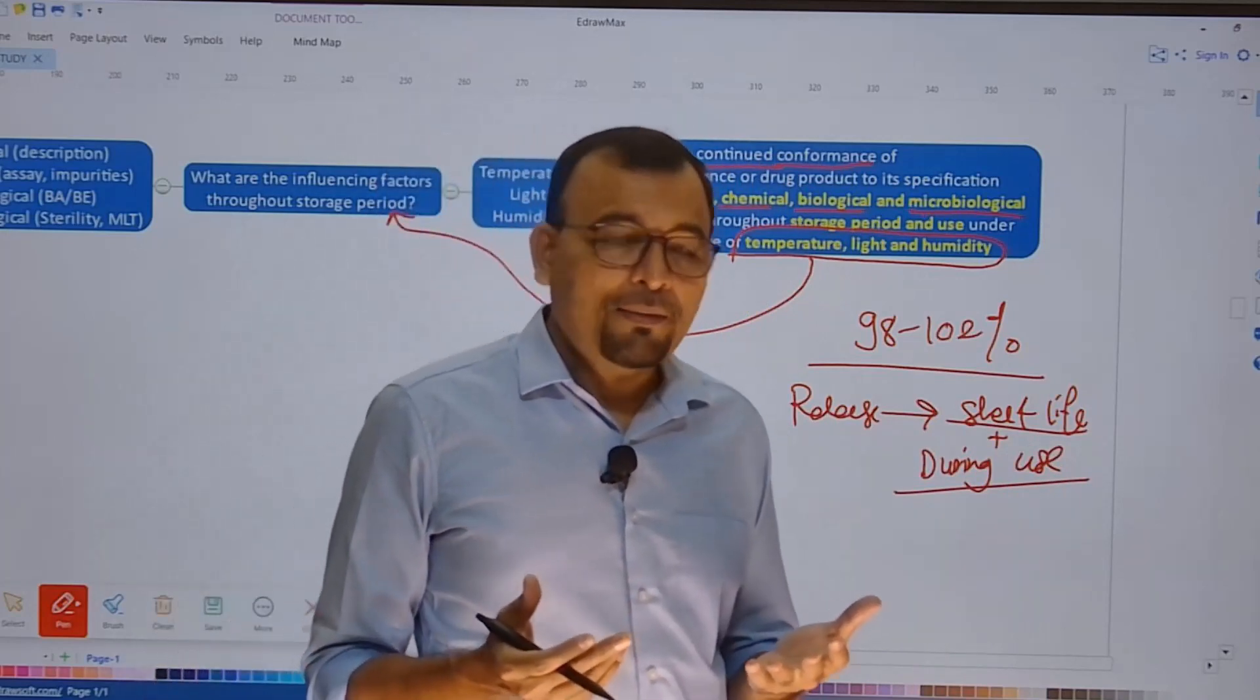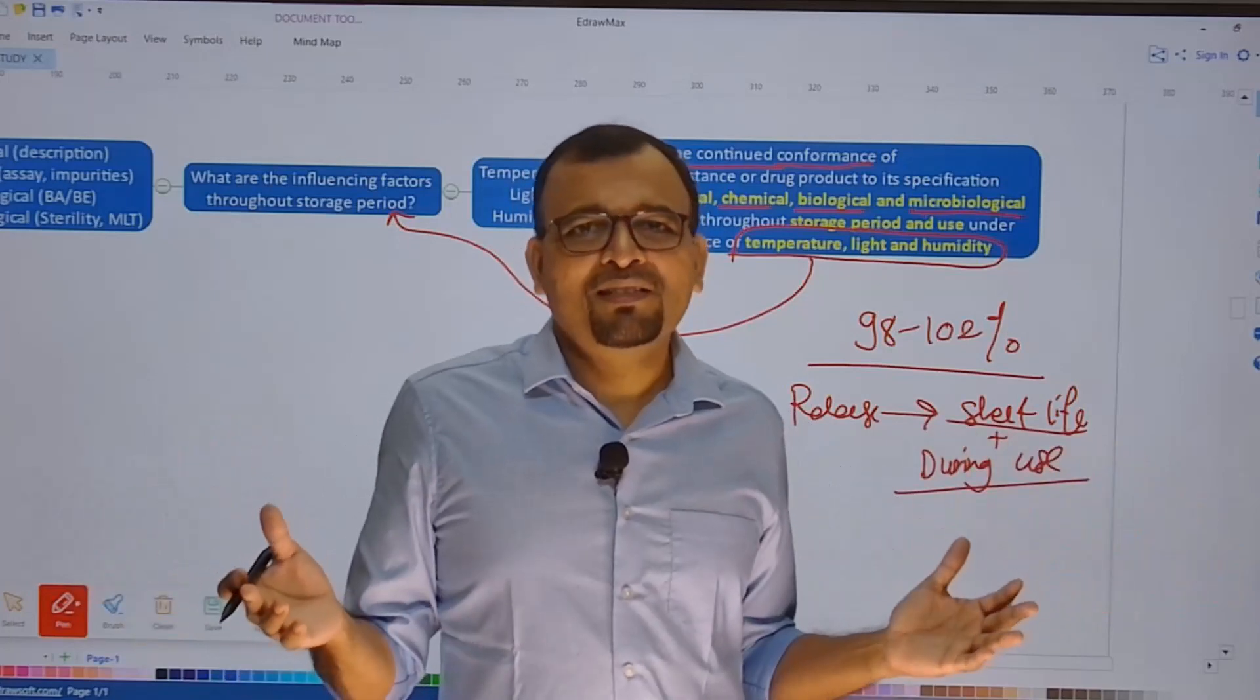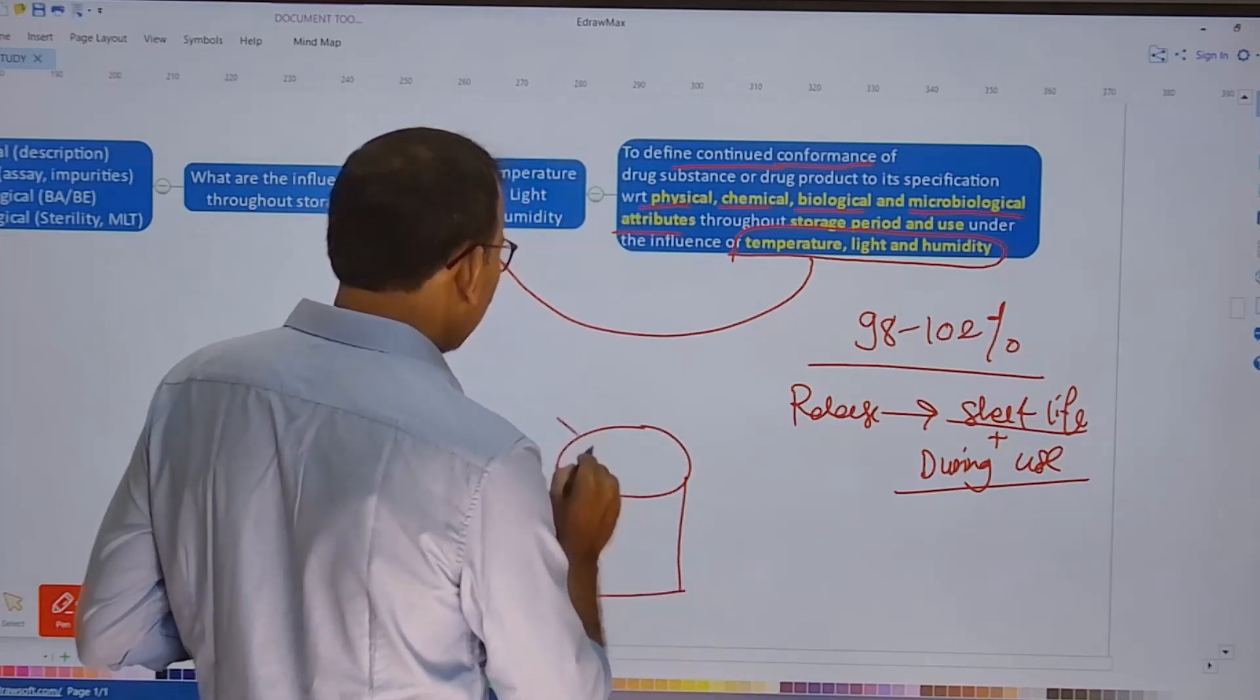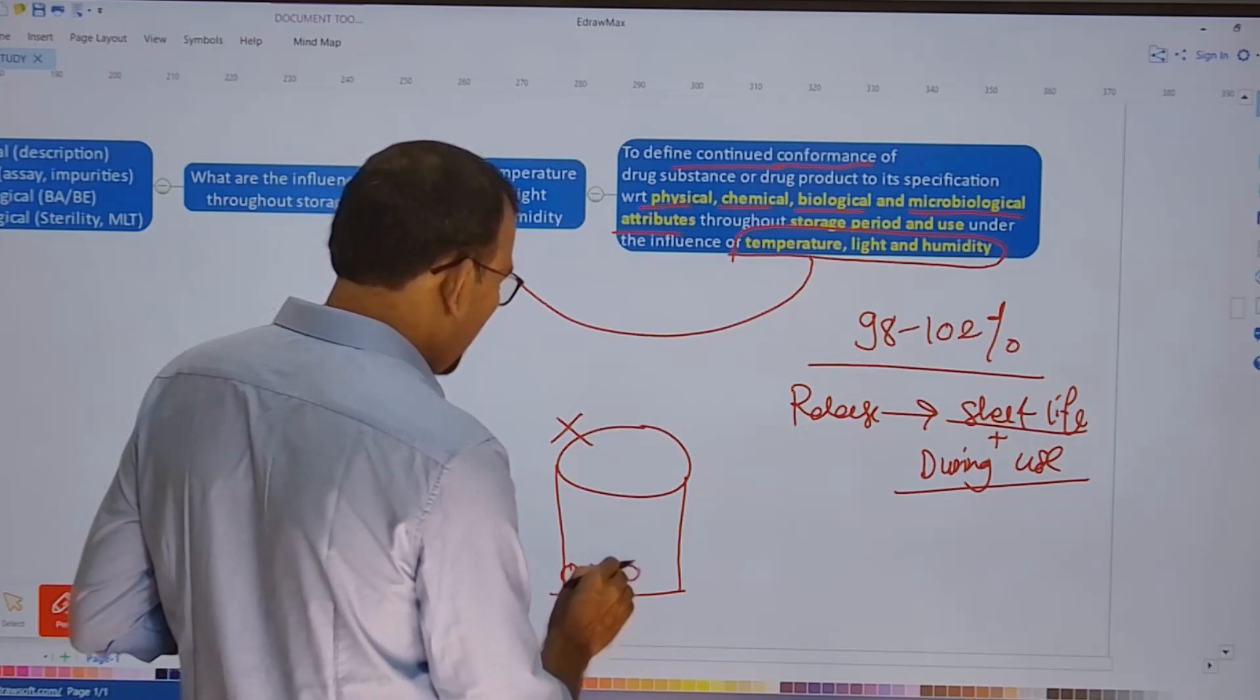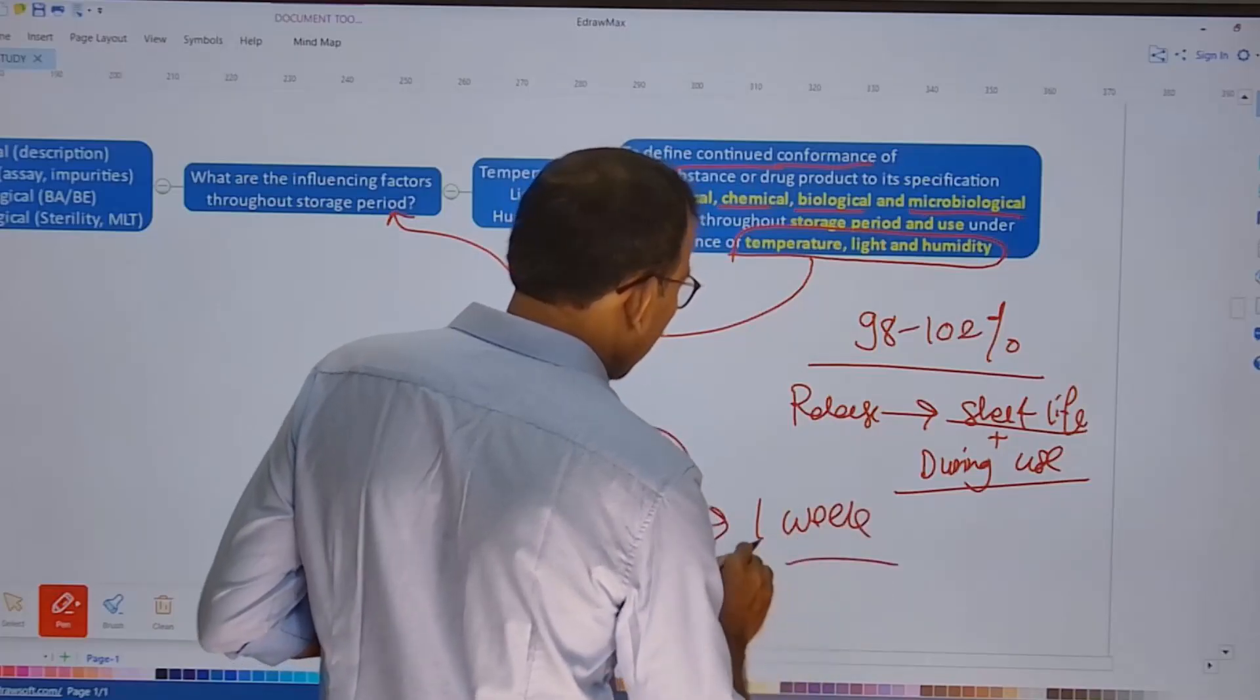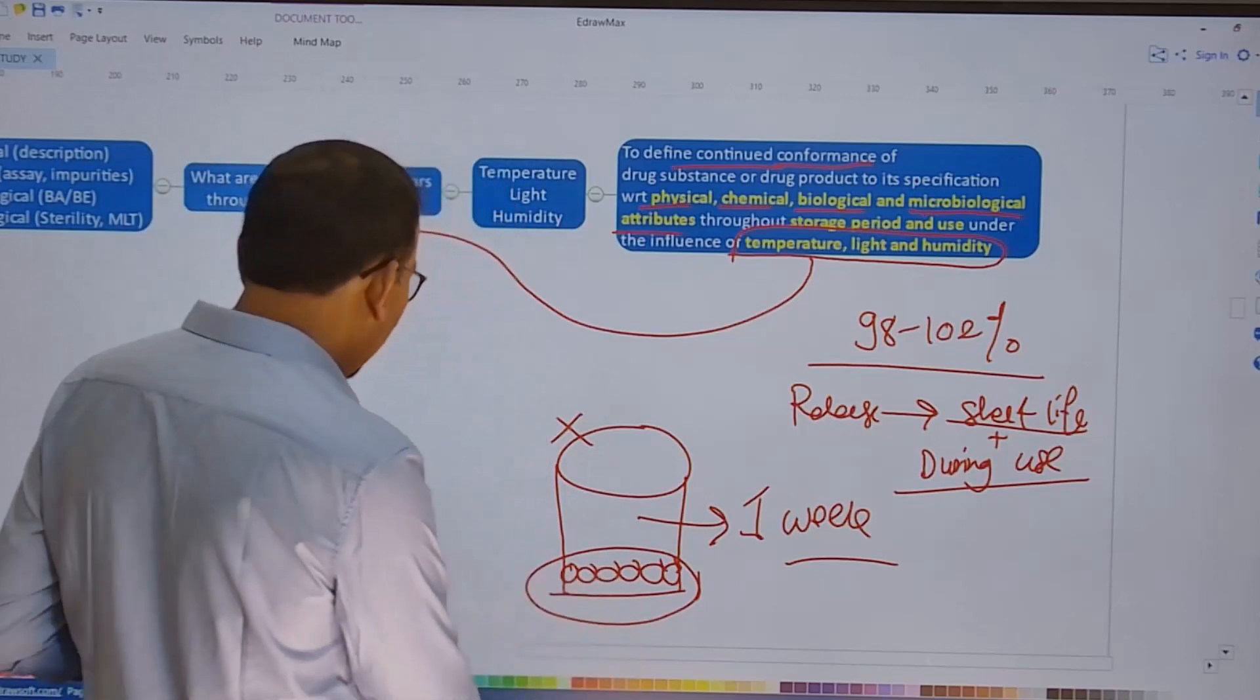Some products, you know, they are having multiple dosages packaged into a single container, and this container is going to get consumed over a period, let's say around 30 days. So when I open the container, now the packaging integrity is going to get lost. But I have another, let's say, five or six dosage units that need to be consumed over a period of, let's say, one week. So what is going to be the quality of this leftover dosage unit?